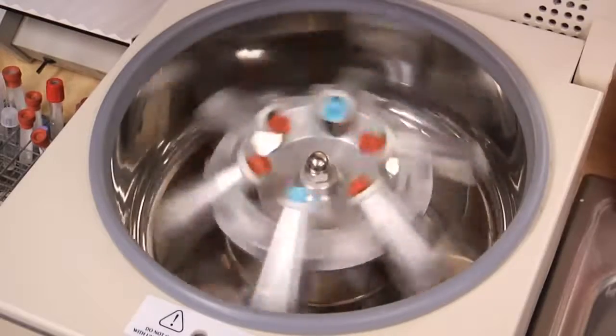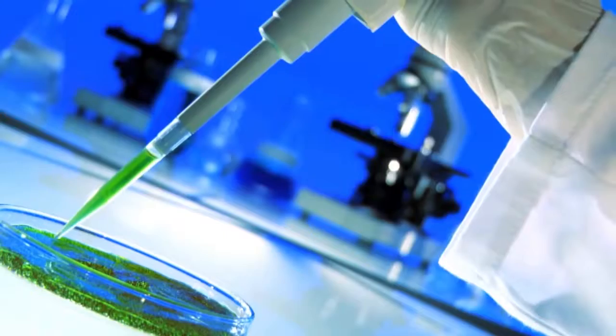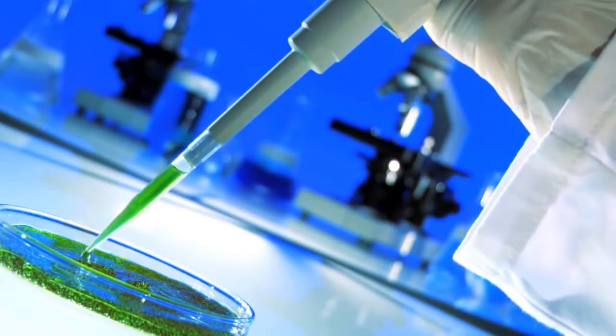Laboratory technicians then separate the stem and fat cells by using a centrifuge system. From here, the stem cells are placed in a petri dish and given food they need to grow.